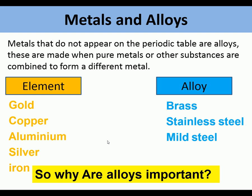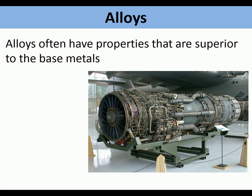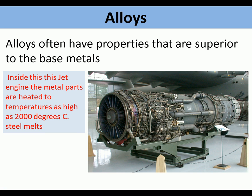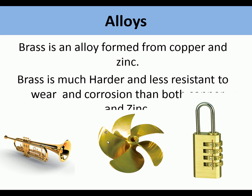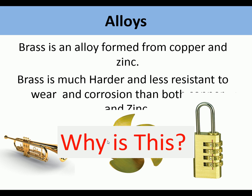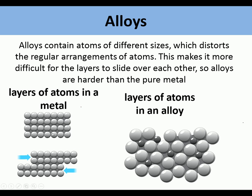Why are alloys important? Alloys have properties that are superior to base metals. For example, the jet engine could not be made with pure metals — it needs alloys to get the right characteristics. Without alloys, the engine would not function. Brass is formed from copper and zinc, and brass is much harder and more resistant to corrosion than either copper or zinc individually. This is because alloying disrupts the regular layers of atoms, making the material harder.